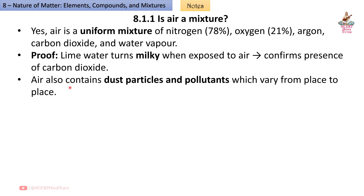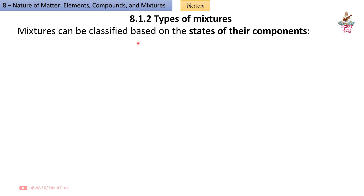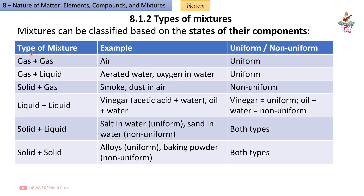Air also contains dust particles and pollutants, which vary from place to place. 8.1.2 Types of Mixtures: Mixtures can be classified based on the states of their components. Gas + Gas example: Air — Uniform.